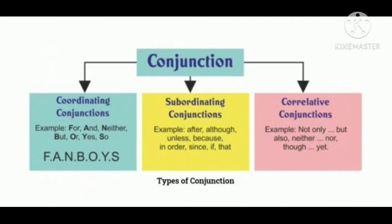Conjunctions are of three kinds. First, coordinating conjunction. Second, subordinating conjunction. And third, correlative conjunction. We will be studying each type and examples one by one.